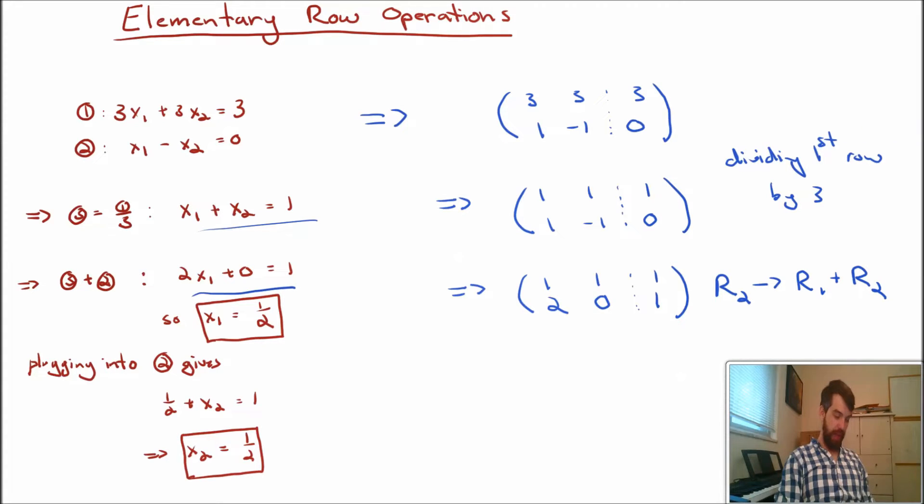So then what I did on the left was I used the second of these equations, that's corresponding to our second row, to evaluate that x1 had to be a half. But if I look down here at this bottom row, this series of numbers 2, 0, 1 is precisely corresponding to this equation, this linear equation, 2 times x1 plus 0 is equal to 1. And so from this I can get the same value that x1 is equal to a half. So that tells me the first variable here.